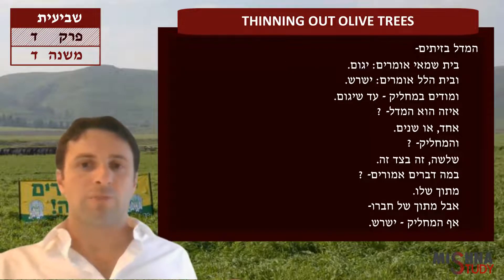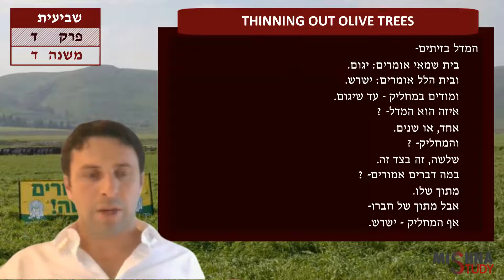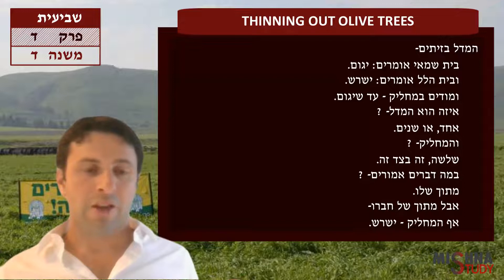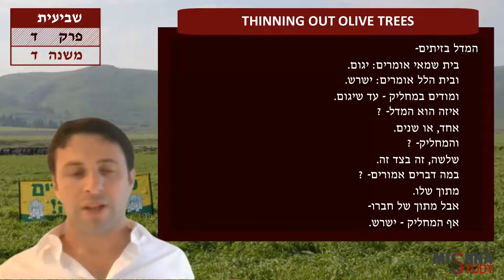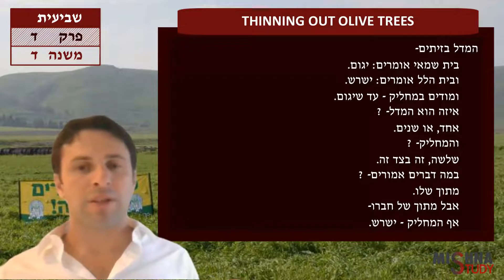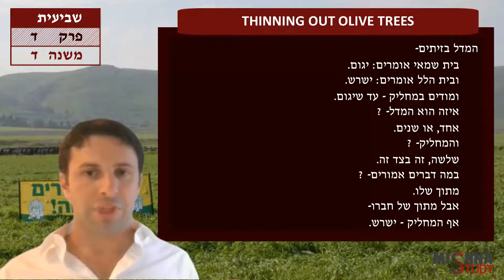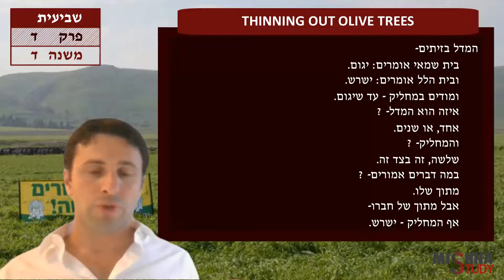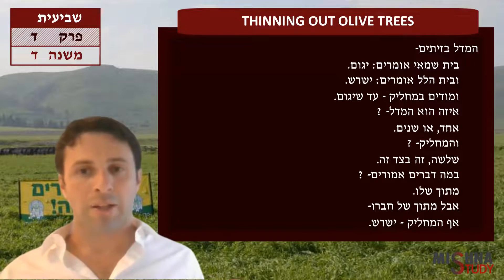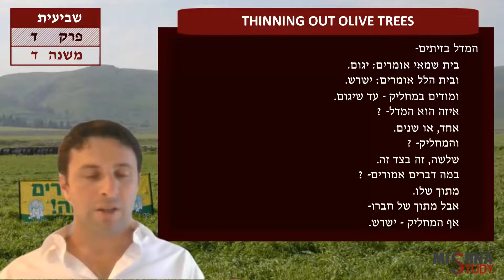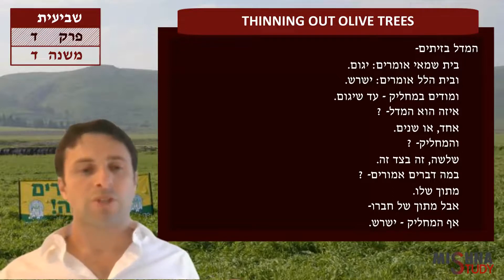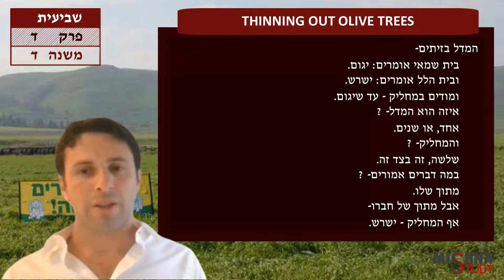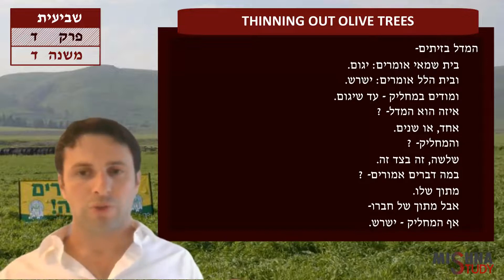Umodim b'machalik ad sheyagom — Beit Hillel agrees though: if you're going to be mechalik, which we'll see later in the Mishnah, that means you're already skimming off too many trees. There's a certain amount of trees, and now you're cutting way too many. At that point, Beit Hillel says ad sheyagom — you need to leave the tree stumps. Ezu ha-medel — what's considered medel, thinning out trees? Ahad o shnayim — one or two olive trees. Beit Hillel says you're allowed to uproot. When it comes to mechalik, literally smoothing out the field, that's three trees. If you're taking three trees, that's considered mechalik, and Beit Hillel would agree that you're not allowed to uproot — rather, you must leave the tree stumps.